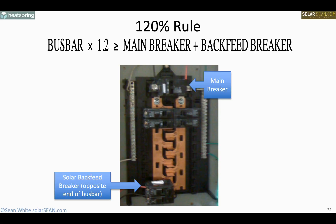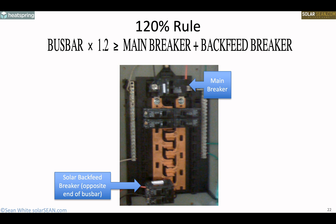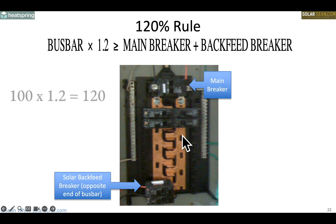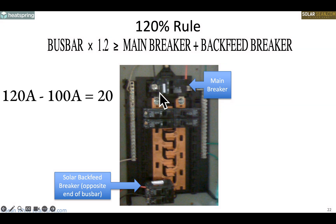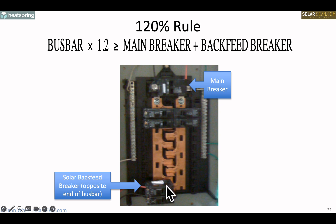And in the beginning, there was code. Here's something from Article 705, Section 705.12 of the National Electrical Code. If you want to do a simple installation: here's your main breaker, and this is called the bus bar — it's where you connect your breakers. If my bus bar is rated at 100 amps, I do 100 times 1.2 equals 120. Then subtract the 100-amp main breaker rating, and I get 20 amps left over for the largest solar backfeed breaker — placed at the opposite end of the bus bar. That is called the 120% rule.